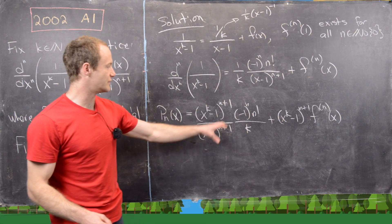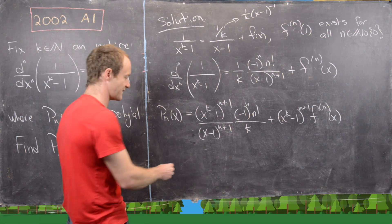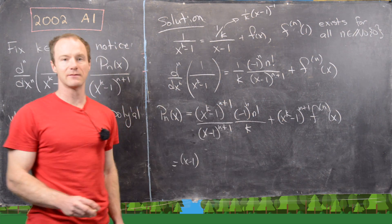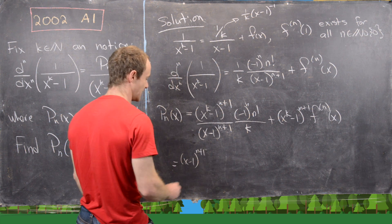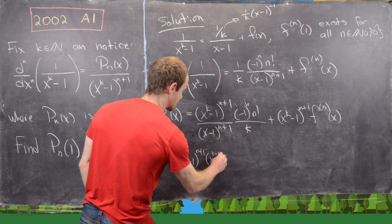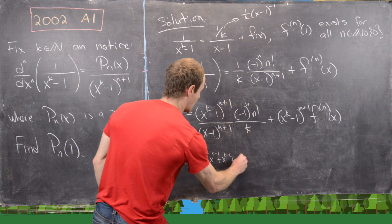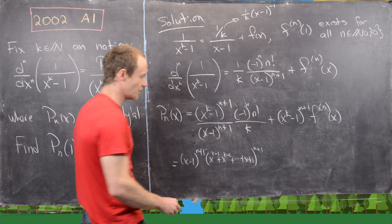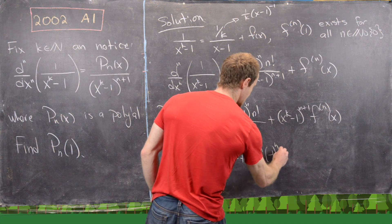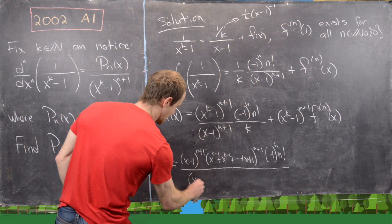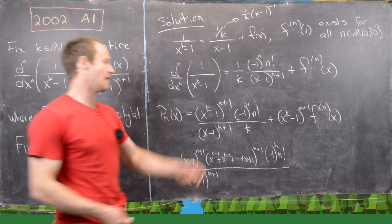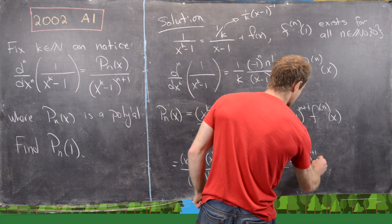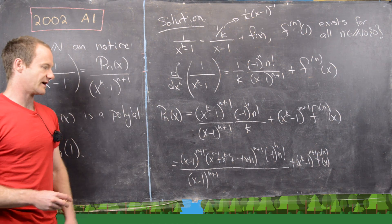Using the factorization from the beginning, x^(k-1) = (x-1)(x^(k-1) + x^(k-2) + ... + x + 1), so x^(k-1)^(n+1) = (x-1)^(n+1) times (x^(k-1) + x^(k-2) + ... + x + 1)^(n+1). This lets us cancel the (x-1)^(n+1) in the numerator with the one in the denominator, leaving (x^(k-1) + ... + x + 1)^(n+1) times (-1)^n · n!/k, plus x^(k-1)^(n+1) times the nth derivative of f at x.